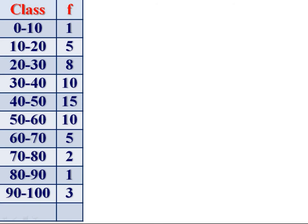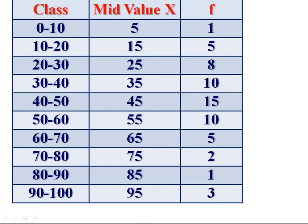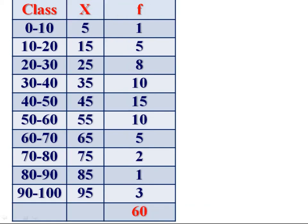0-10, 10-20, 20-30, 30-40 and so on. For finding the arithmetic mean and standard deviation, we have to find mid values. Mid value X is equal to lower limit plus upper limit divided by 2. 0 plus 10 divided by 2 is 5, 10 plus 20 divided by 2 is 15, 20 plus 30 divided by 2 is 25 and so on. Class X mid values, frequency.